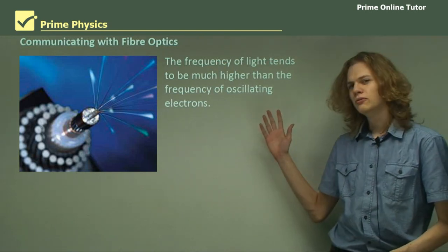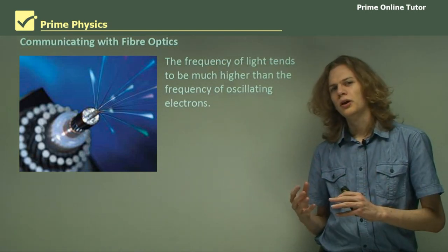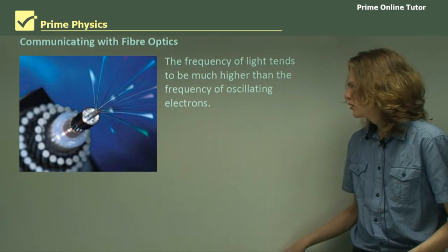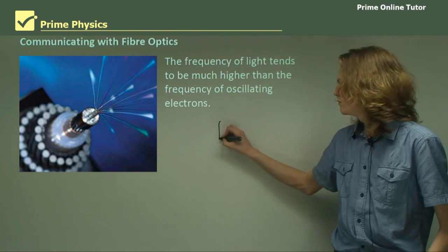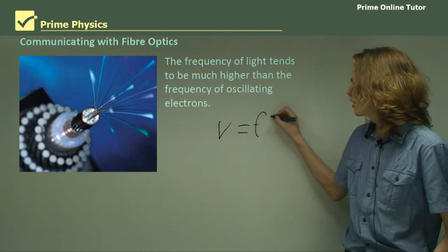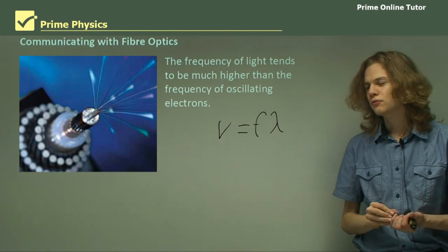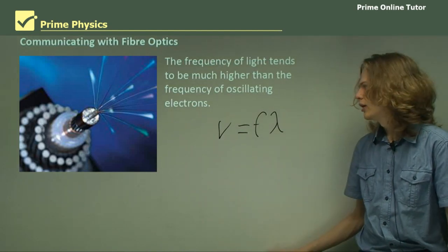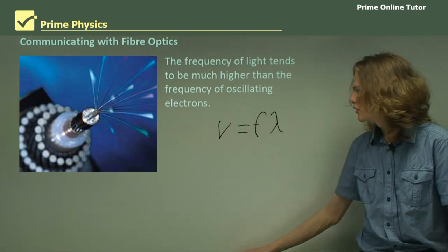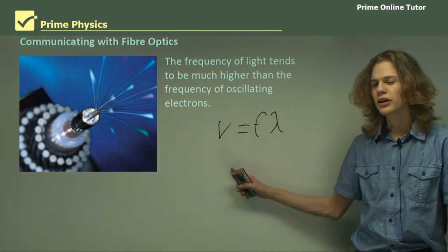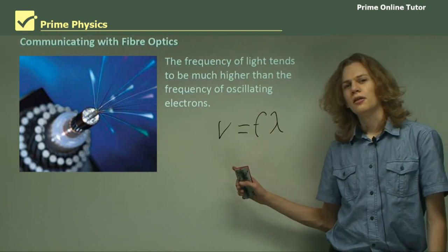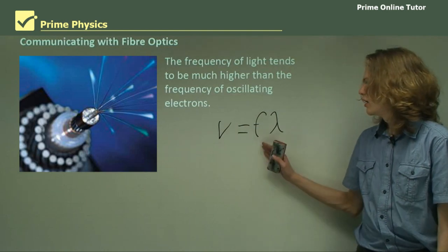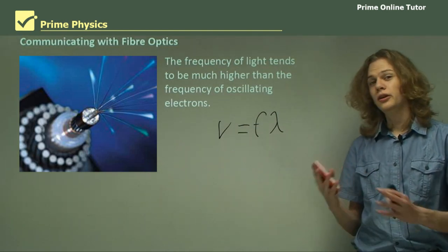Now the frequency of light, as we know, will depend on the wavelength of light. You can remember that old wave equation, v equals f lambda. We know that the wavelength of light is very, very small — on the scale of a few nanometers. But we know that the velocity of light is very, very high — something like 300 million meters per second. This means that the frequency of light is going to be really huge.